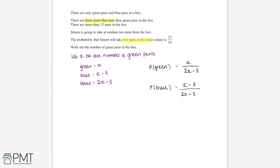We've been told that the probability Simon takes two pens of the same colour is 27 over 55. This involves conditional probability because when Simon chooses the first pen he does not put it back before choosing the second. We can treat this as we would with numbers — we just need to subtract one from the relevant number of pens and from the total number of pens.